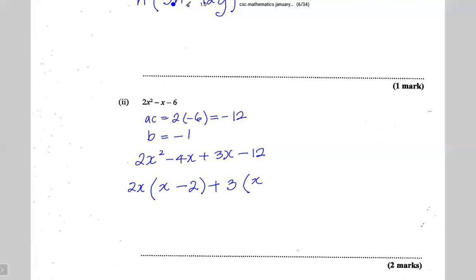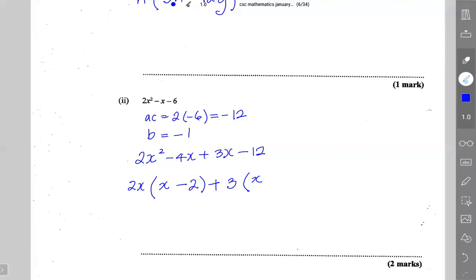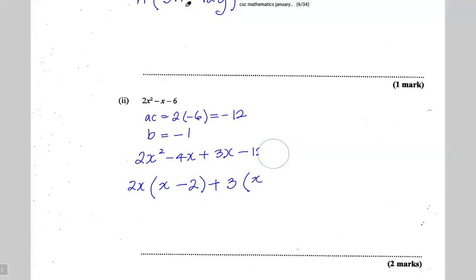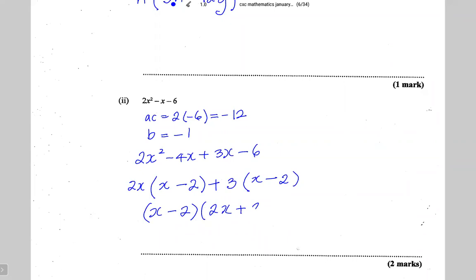This is my error — this shouldn't be 12 here, it should be 6. So 3 into 3x is x and 3 into 6 is 2. Both groups share the common factor (x minus 2).